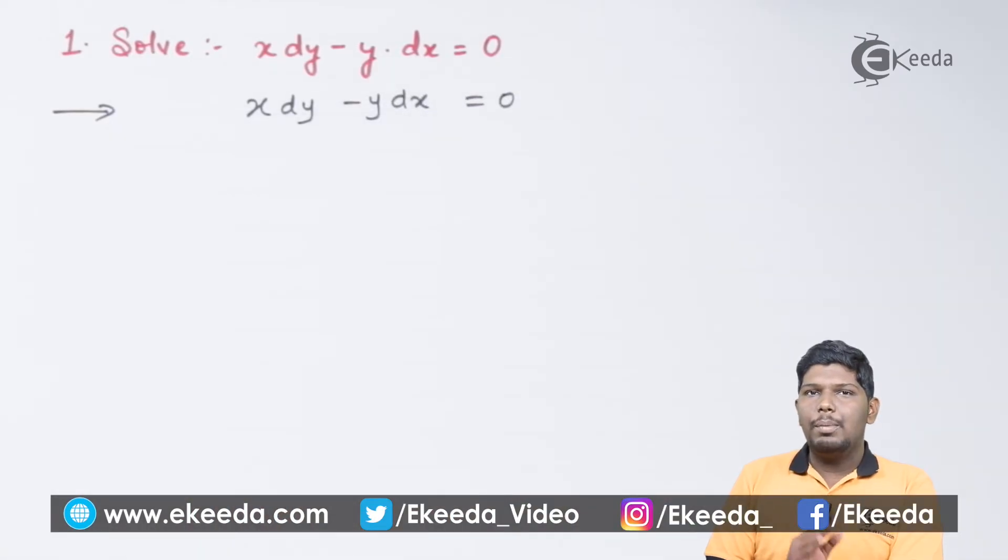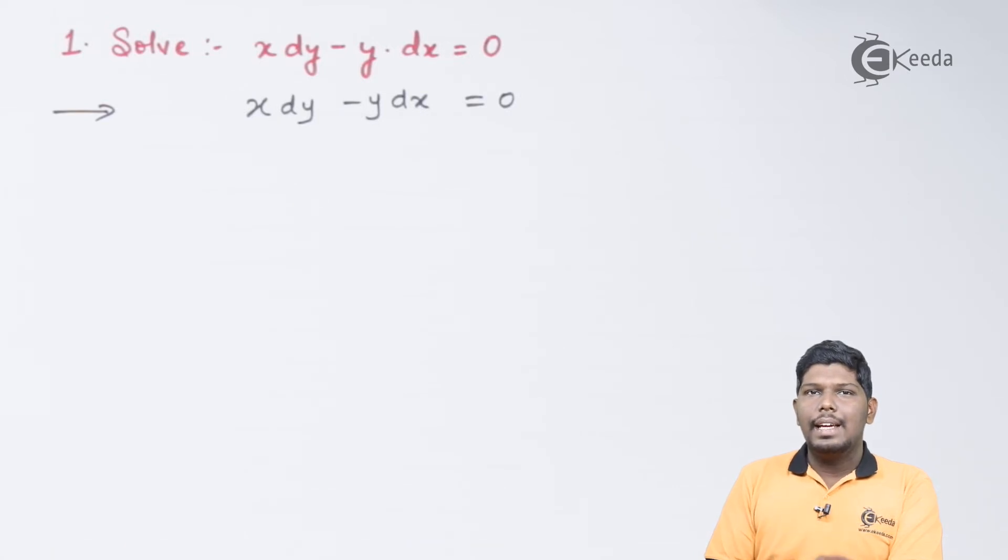The method is called as variable separable method. The basic meaning of variable separable is separate the variables on both the sides. As you can see, in the first problem, we have two variables, one is x and other is y.